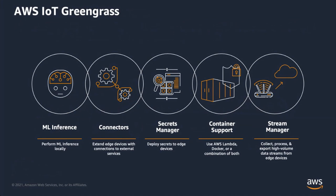A couple of Greengrass features we'll be using: the first is ML inference, or machine learning inference — the ability to run machine learning models at the edge, especially when using GPU-backed hardware. We see these predominantly for computer vision. The second is container support — the ability to take logic that you've created, tied to the machine learning inference, to take a frame of video, send it to ML inference, and based on predictions, take some type of local action.